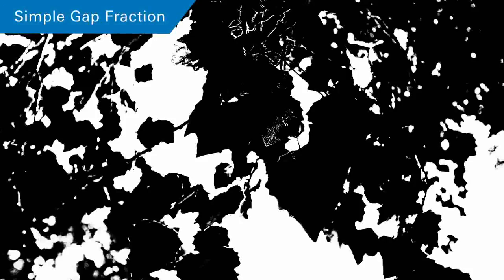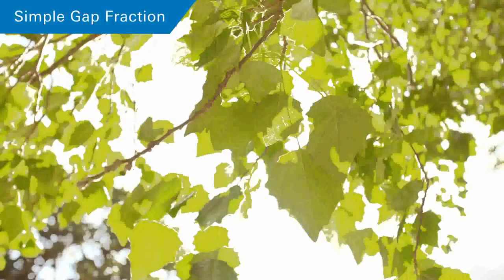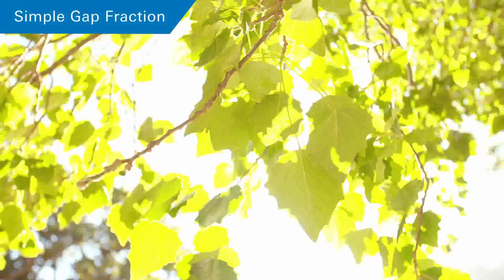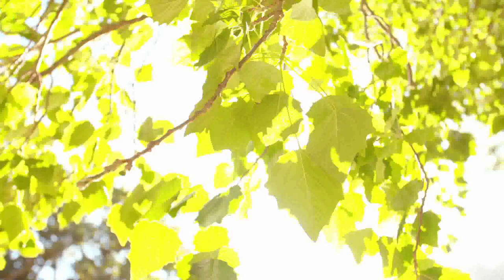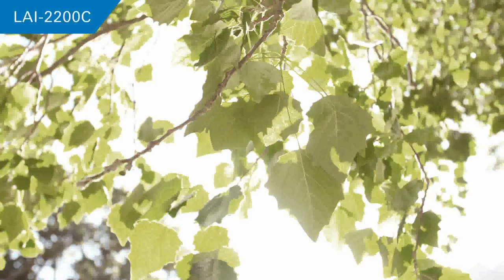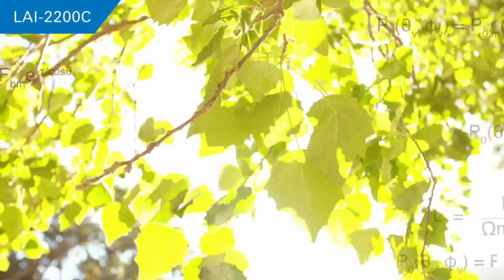Simple gap fraction methods also generally assume leaves are perfectly black — that they block all sunlight. In reality, some sunlight passes through or bounces off leaves. This can cause large errors, especially when sunlit leaves are in view. The LAI 2200C deals with this issue in two ways: first, it uses a blue filter that improves the contrast between the leaves and sky. Also, a post-processing correction is provided in the support software.